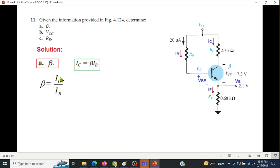Beta is IC over IB. IB is given, 20 micro, but we don't know IC. IC we can calculate from here. We know that IC is approximately equal to IE, and IE we can calculate from VE divided by RE. So IC is approximately equal to IE, which is equal to VE over RE. Putting in the values, IC is 3.09. Now we put this value here to get beta: 3.09 divided by IB 20 microampere, equals 154.5.